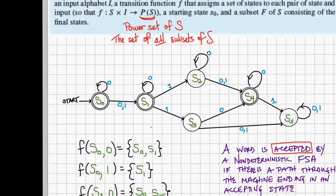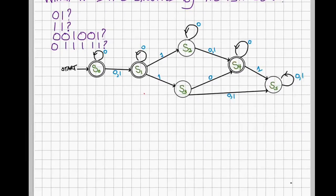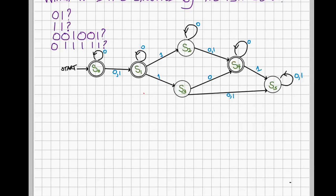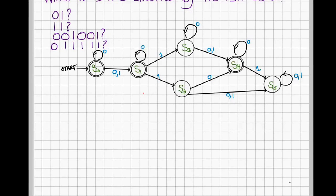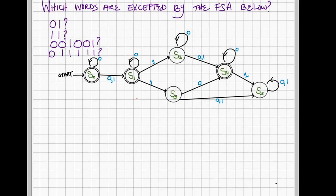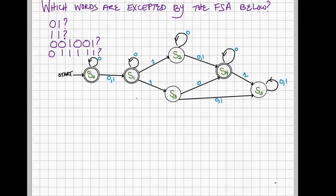So, let's go to our final example and ask which of the following sequences are accepted by our example of a non-deterministic finite state automata. Well, what about 0, 1?